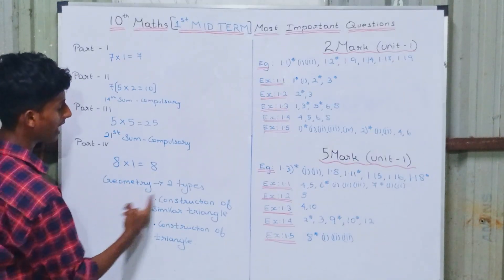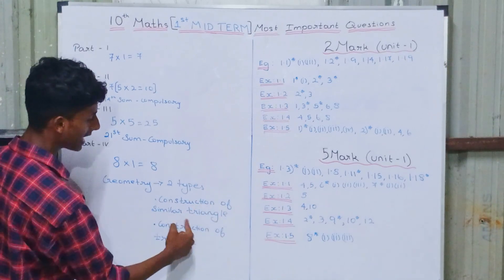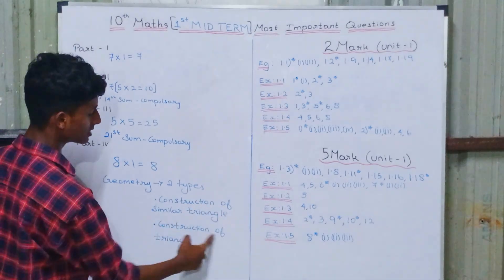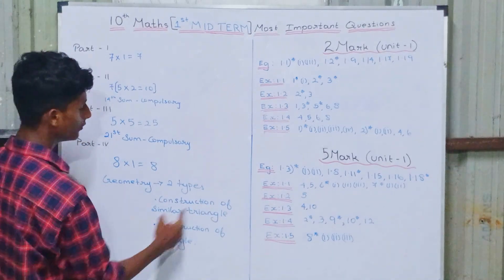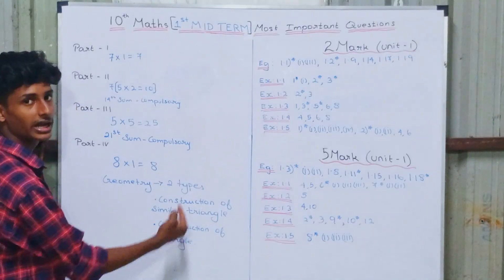There are two types in geometry: one is construction of a similar triangle, and one is construction of a triangle. These are 4.1 and 4.2. You will check.